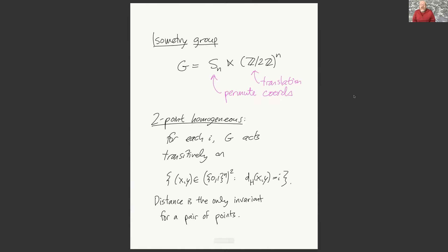The key thing we'll be trying to understand is what symmetries tell us about these things. The isometry group is not hard to figure out. It consists of just two things: first, Z mod 2 acts in each coordinate by translation; and second, you can permute the coordinates however you like. These fit together into a semi-direct product. It's very simple to show both of these give isometries, and showing that these are all the isometries is not too hard — I'll leave it as something for you to think about.